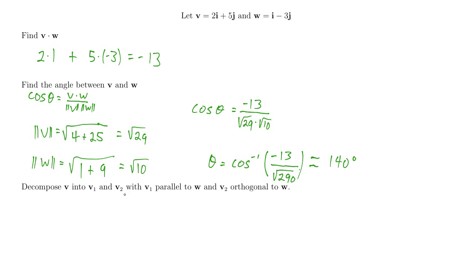Here's another application: let's decompose the vector v into vectors v1 and v2, with v1 in the direction of w — that is, parallel to w — and v2 orthogonal to w, in other words perpendicular to w. To do this, we need to remember the formula for v1: v1 equals v dot w divided by w dot w (or the magnitude of w squared), times the vector w.